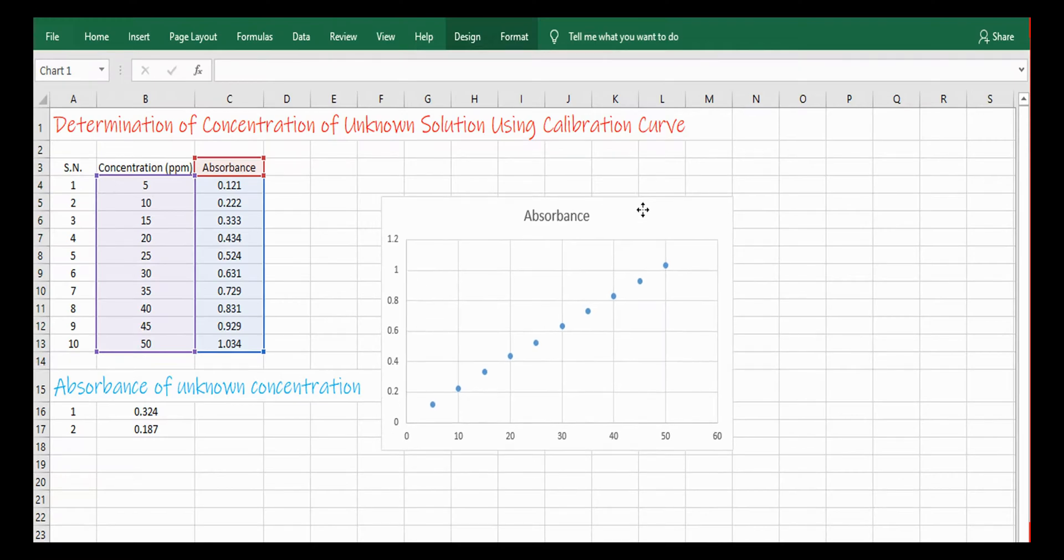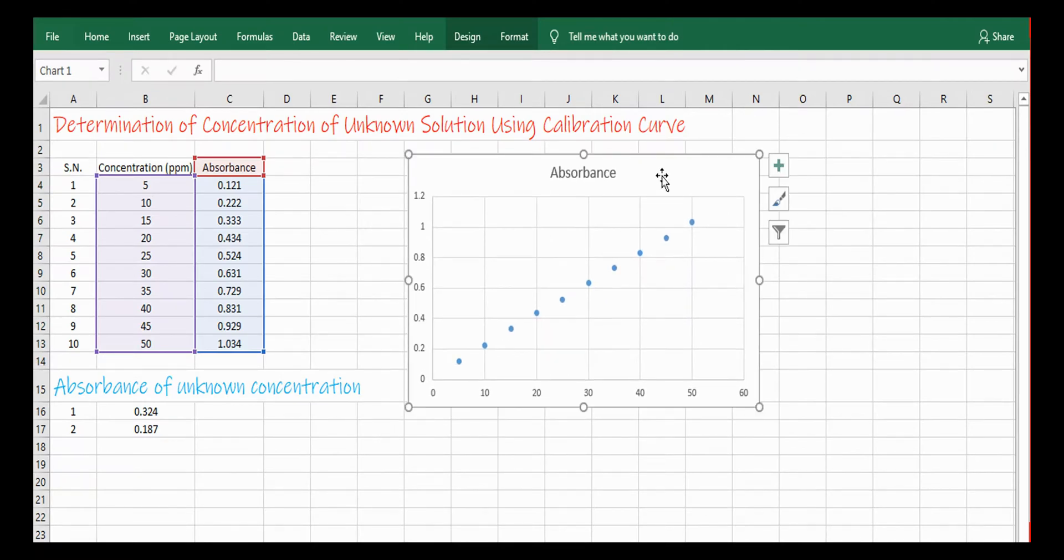Then you will obtain this type of graph. You can drag it to move anywhere you like to shift the graph. You can also put the name of the chart. To put the name of chart, simply you can click on it and can write the name.